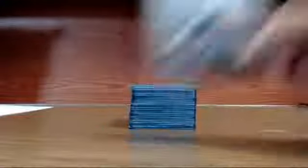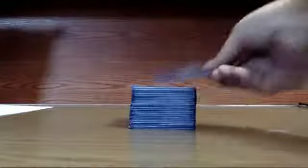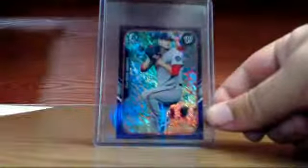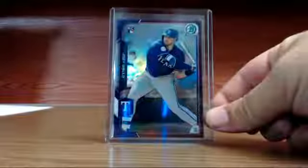Orange paper of Rymel Tapia. Onto the refractors: purple Minnie Shimmer, Lucas Giolito, Joey Gallo purple rookie.